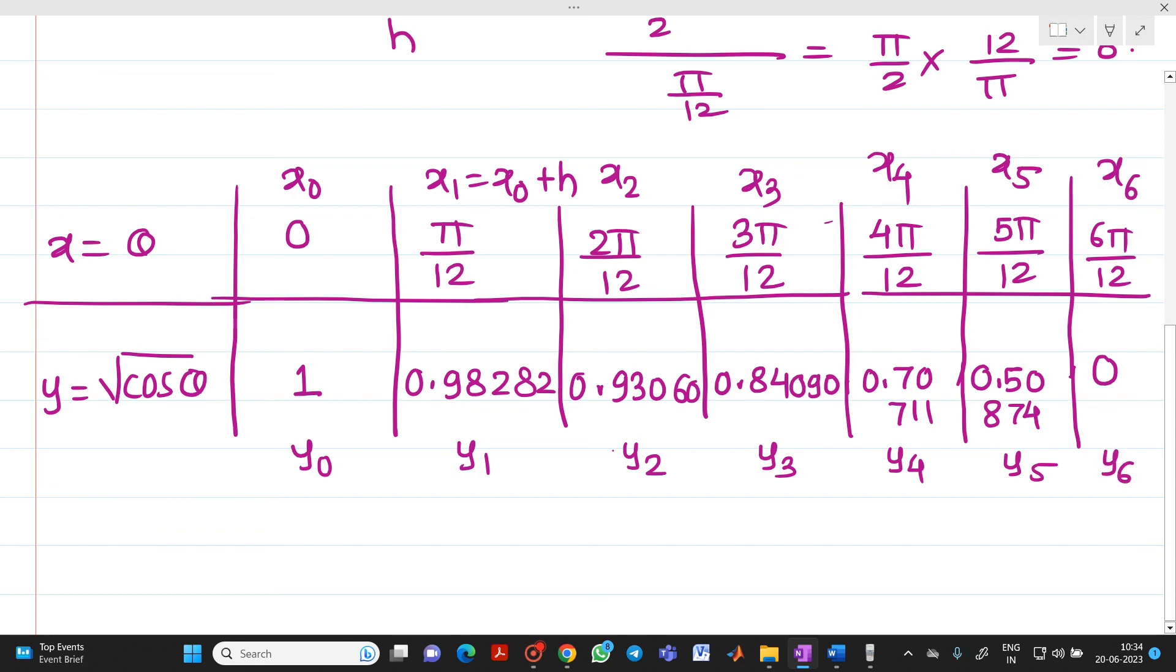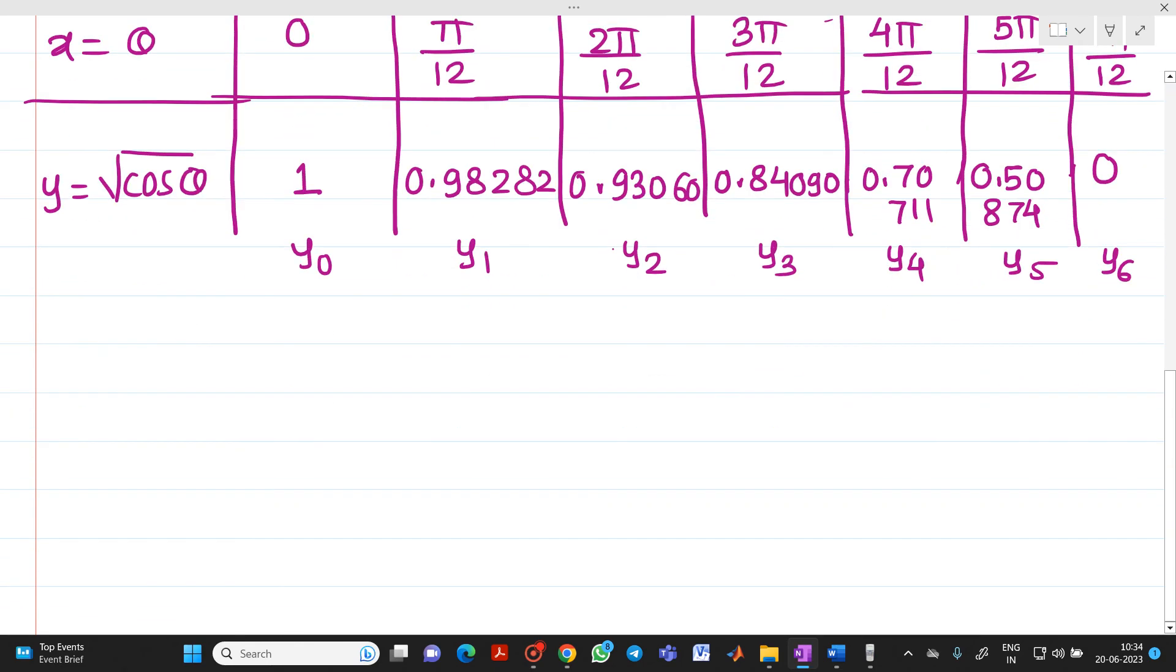If you carefully observe, we got number of intervals as 6, so here we got values up to 6. Now let me write it here, the formula of Simpson's one-third rule.